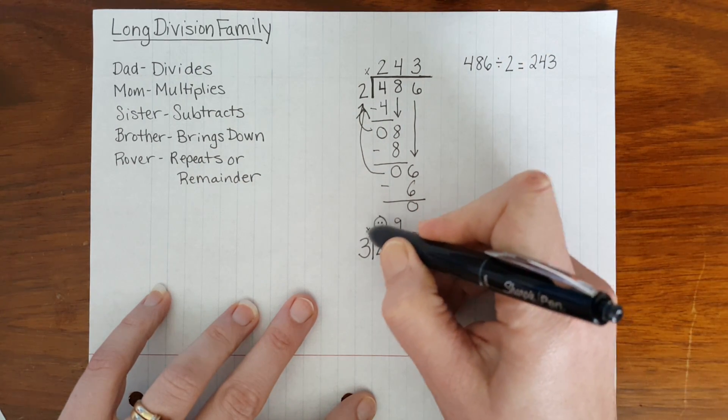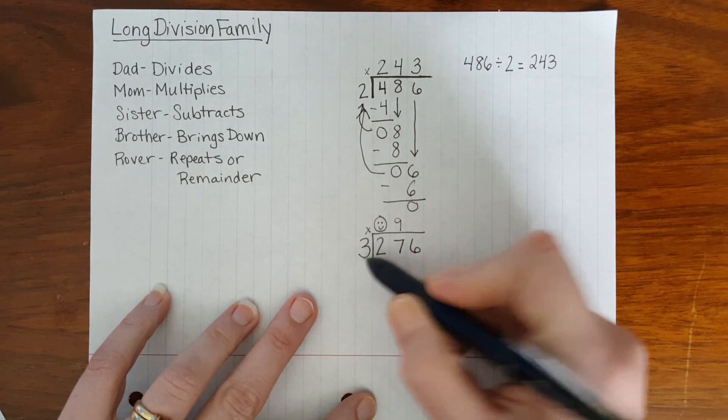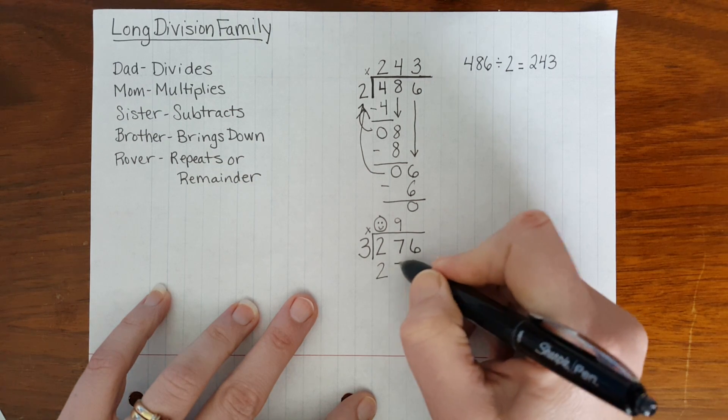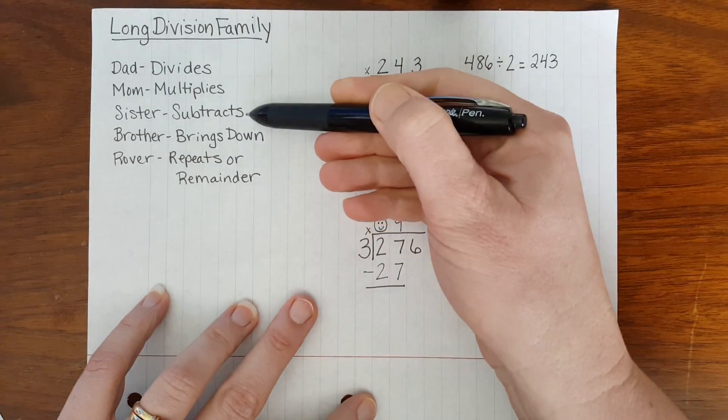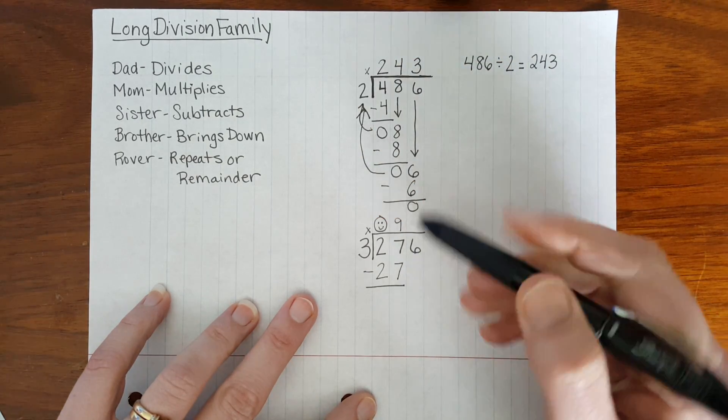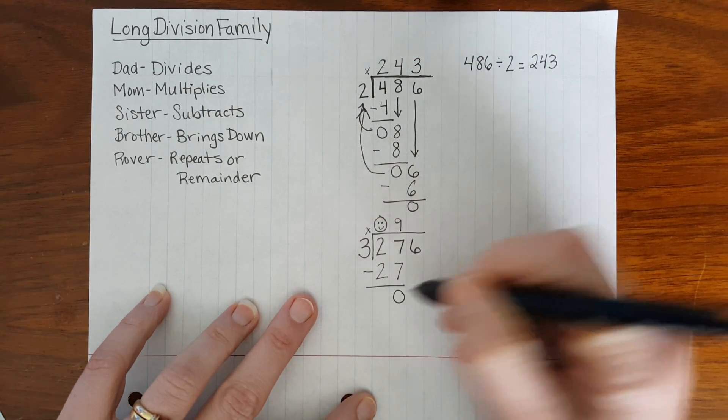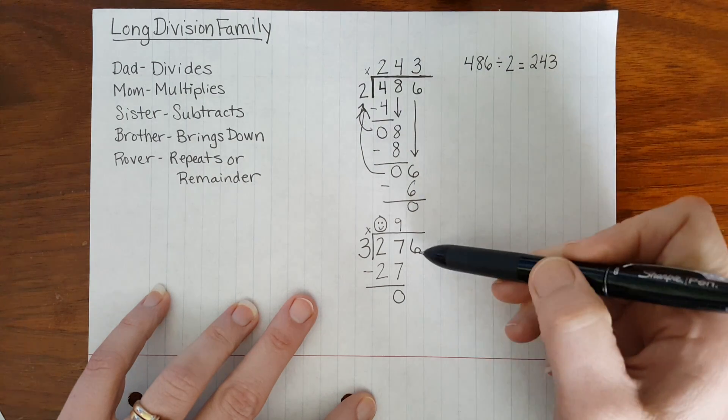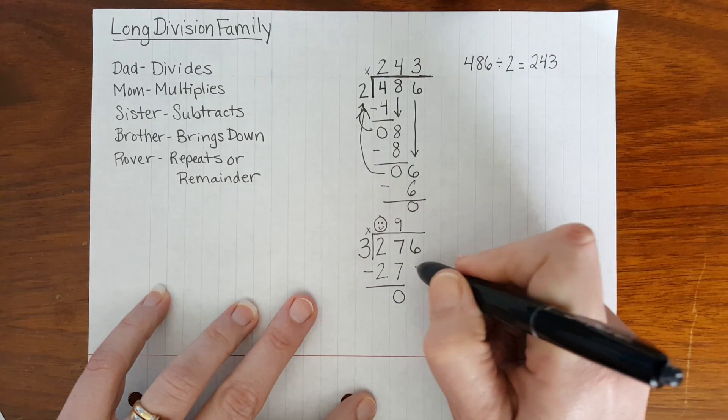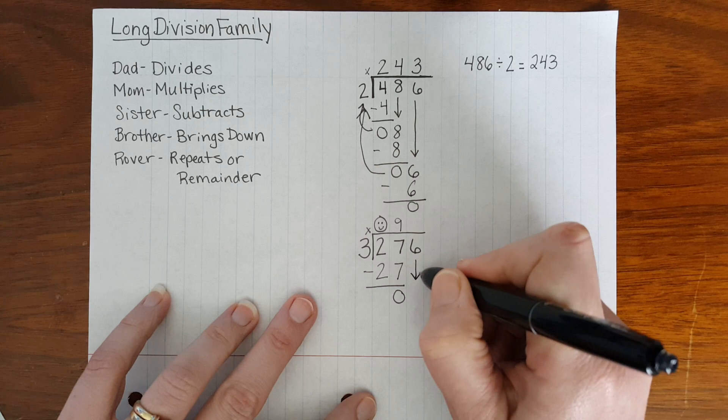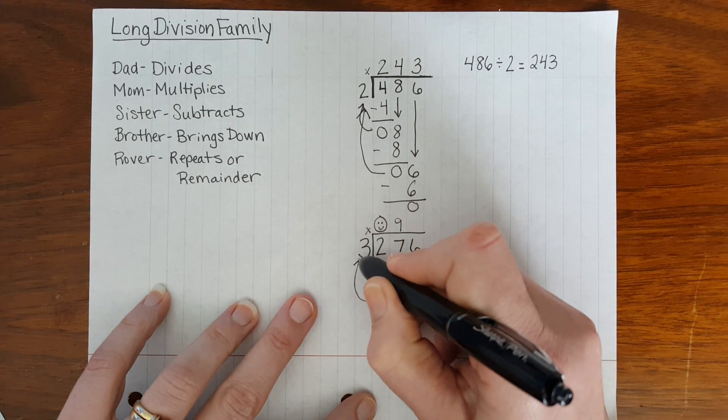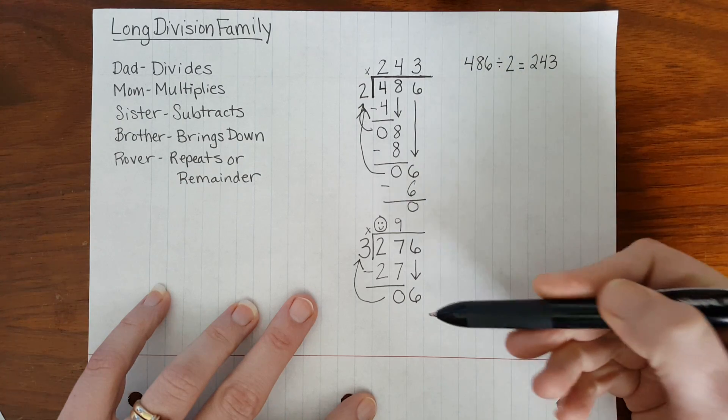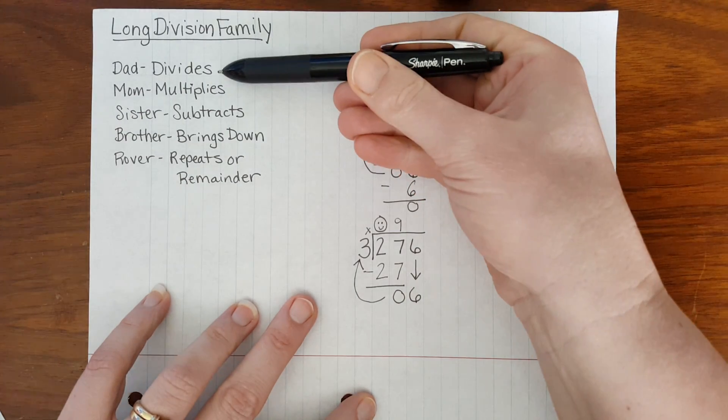Mom double-checks. 9 times 3 equals 27. And after Mom multiplies, sister subtracts 27, take away 27 is 0. We are not done yet because Brother has a number he can bring down. He brings the 6 down and says, Rover, go repeat. Then Dad can start our process over.